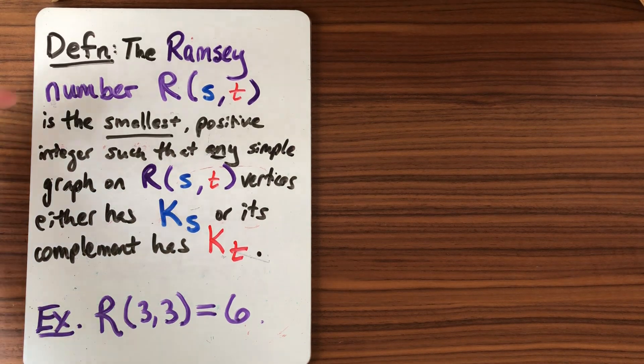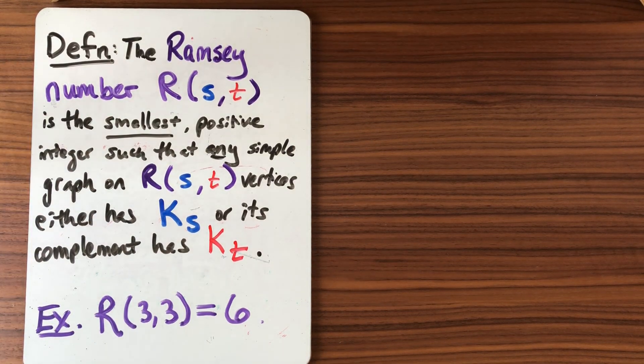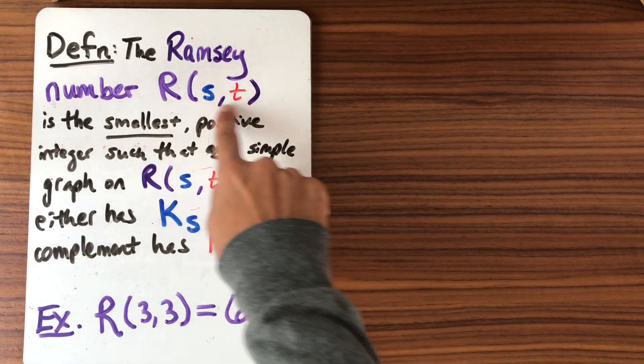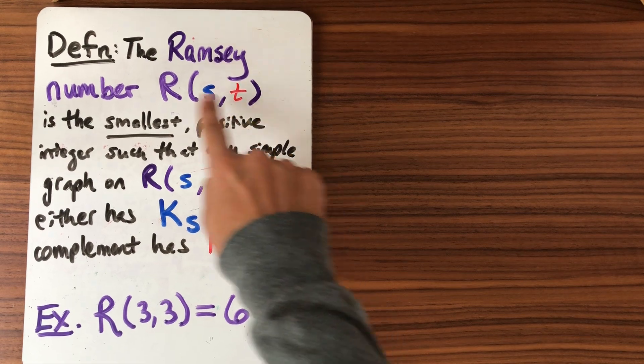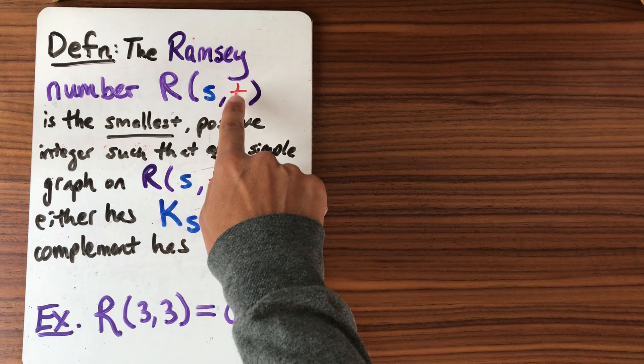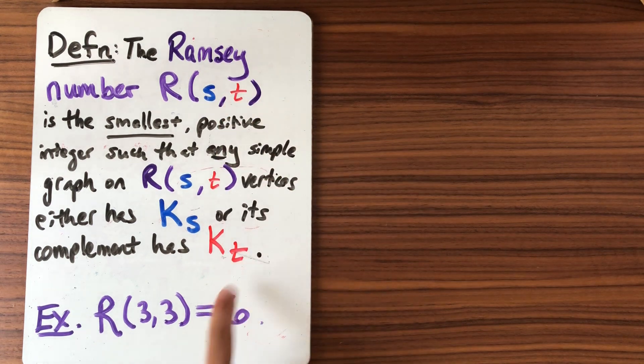Okay, so last time we defined a Ramsey number. What is the Ramsey number for s,t? It's going to be the smallest positive integer such that any simple graph with this many vertices either the graph contains K_s or the complement contains K_t. And we saw that R(3,3) was six.